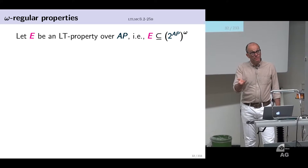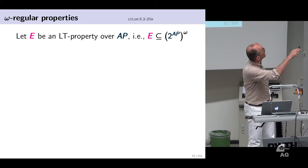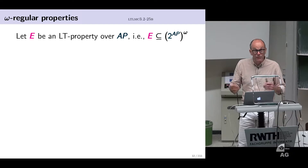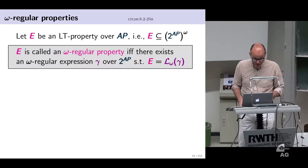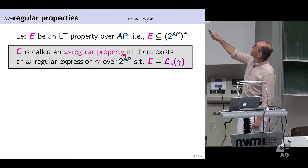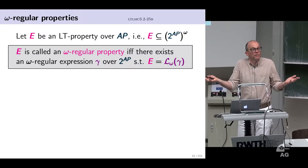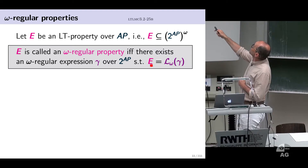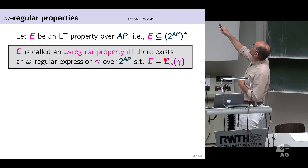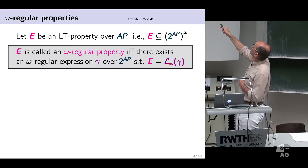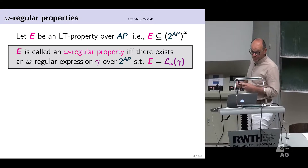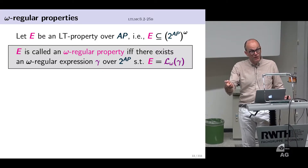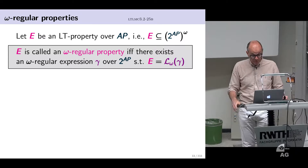Now we apply this to properties. We want to not only have regular safety properties but an enlarged class: omega regular properties. An LT property is a set of infinite traces, and we call it an omega regular property if and only if it can be described by an omega regular expression — there exists gamma such that the property equals the set of infinite words described by gamma. So it's not the set of bad prefixes described by a regular expression, but the property itself described by an omega regular expression.